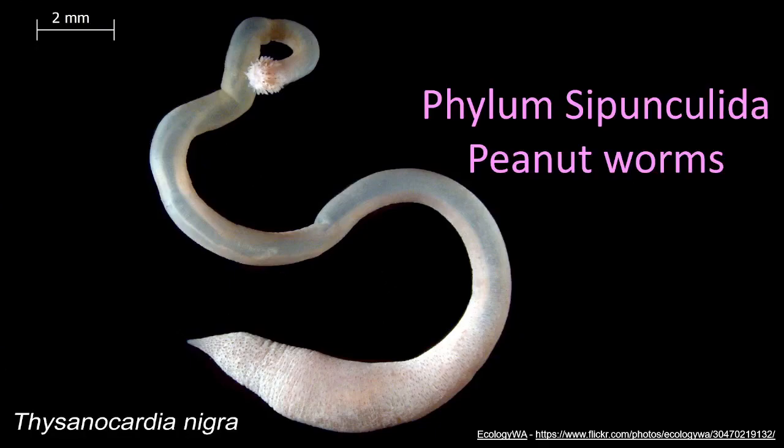Hello dear students, welcome to our discussion on Phylum Sipunculida. Here we will be taking the example of Sipunculus, commonly called peanut worms. The organisms coming under Phylum Sipunculida are marine organisms, they are bottom dwellers, they are burrowing forms, and they feed on the organic matter present at the bottom.